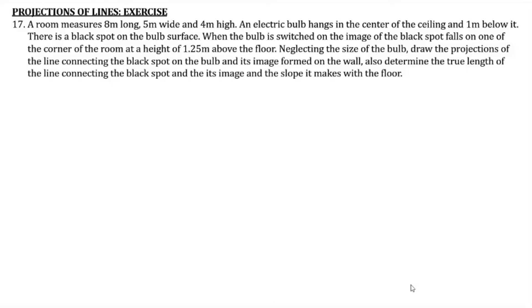The question states: a room measures eight meters long, five meters wide, and four meters in height. An electric bulb hangs in the center of the ceiling, one meter below it. There is a black spot on the bulb surface. When the bulb is switched on, the image of the black spot falls on one of the corners of the room at a height of 1.25 meters above the floor.